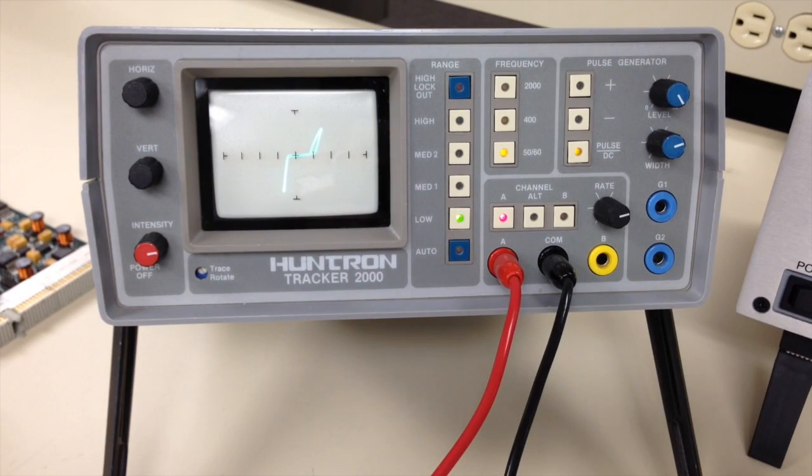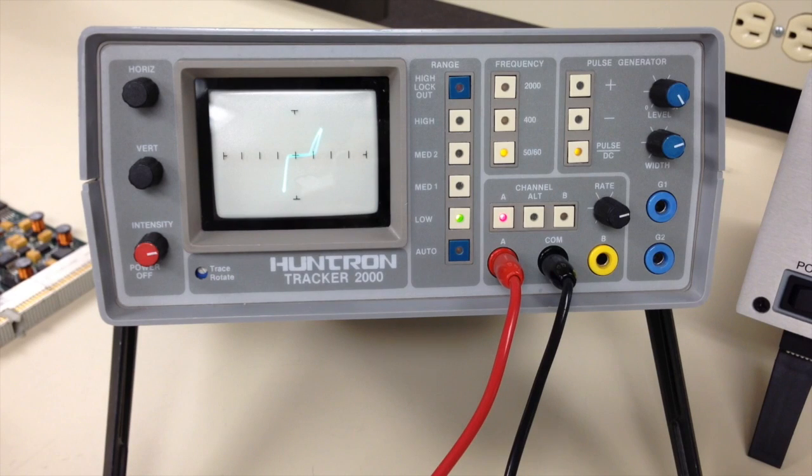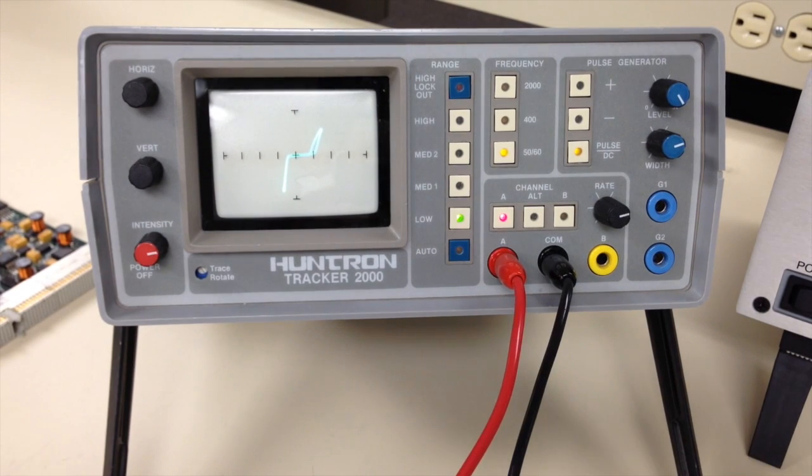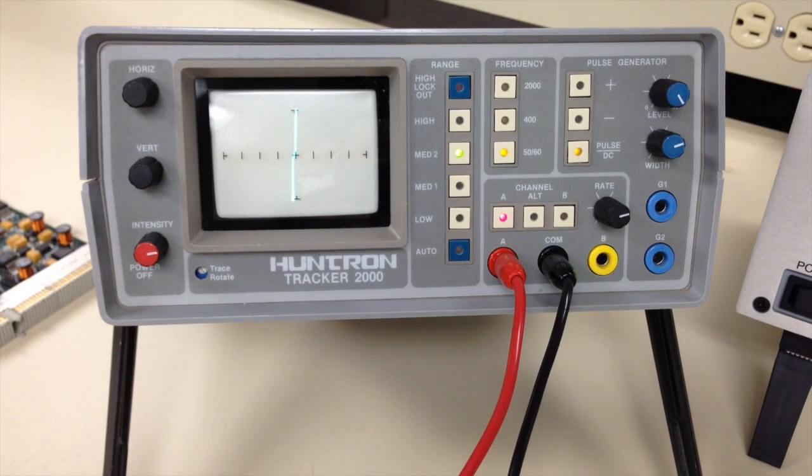This IC has a resistive fault, but is not visible on the 2000 because of the 10 volt, 54 ohm range level. The medium 2 range would be a more appropriate resistance setting, but the 20 volt level is too high making the signature look almost like a short.